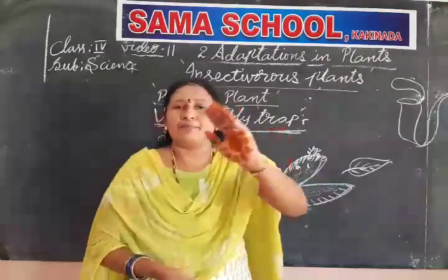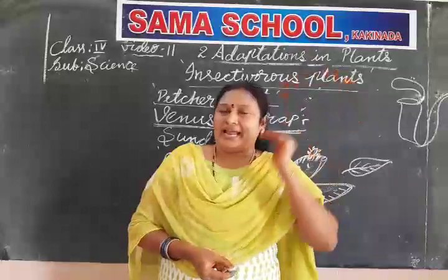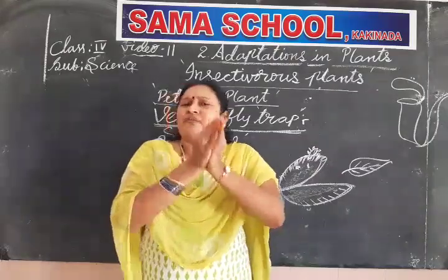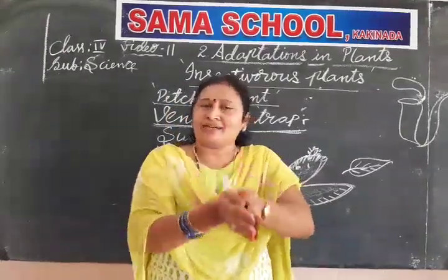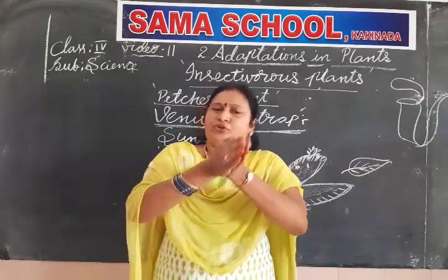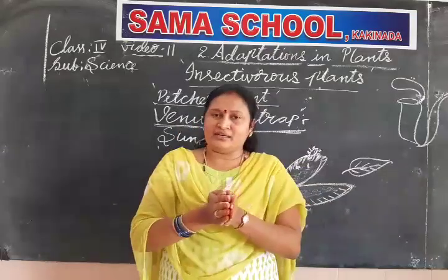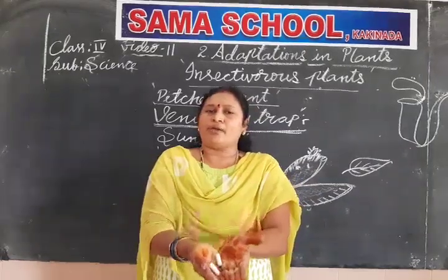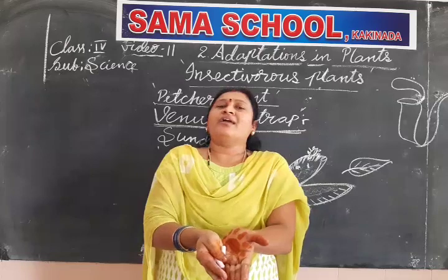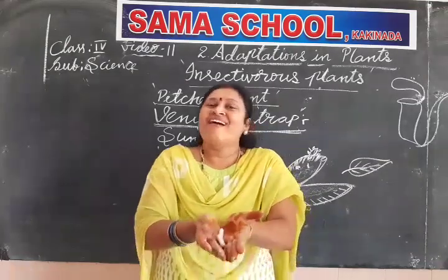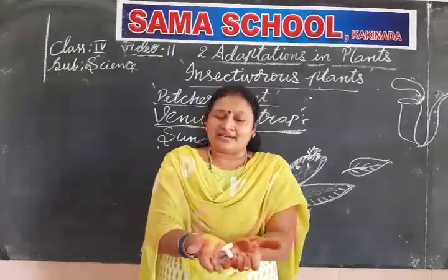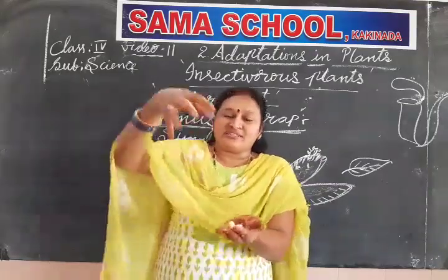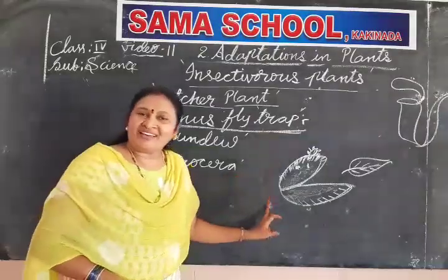This is how the Venus flytrap traps the insect. After some time, due to the pressure of the leaf, the insect dies. Later, the leaf takes the nutrients from the insect and digests it. Whenever it completely takes the nutrients, the leaf slowly opens again, and only the dead body of the insect remains.